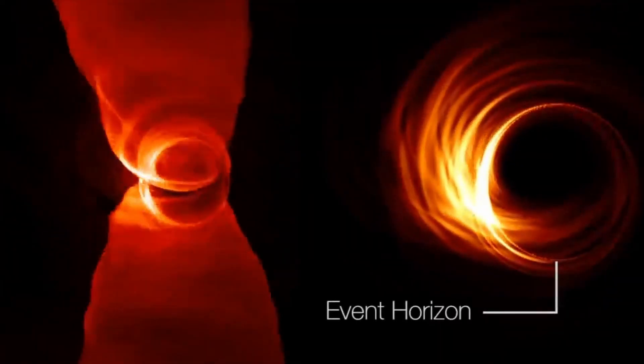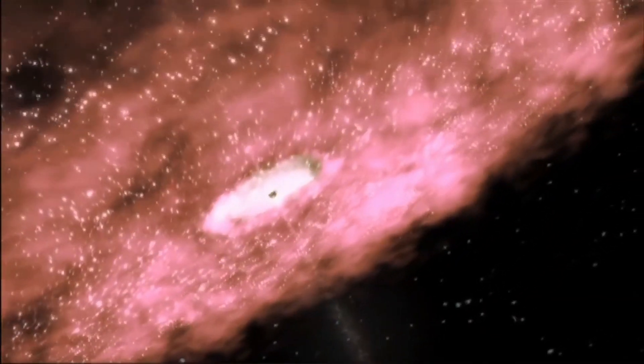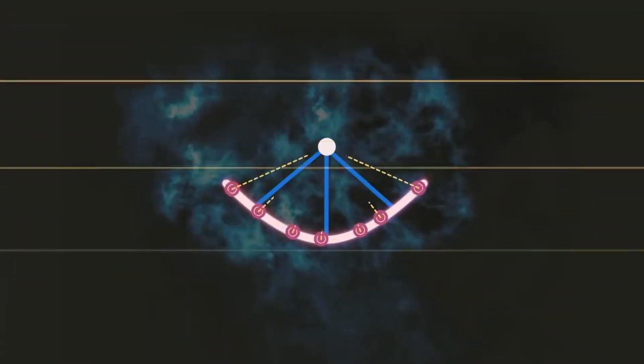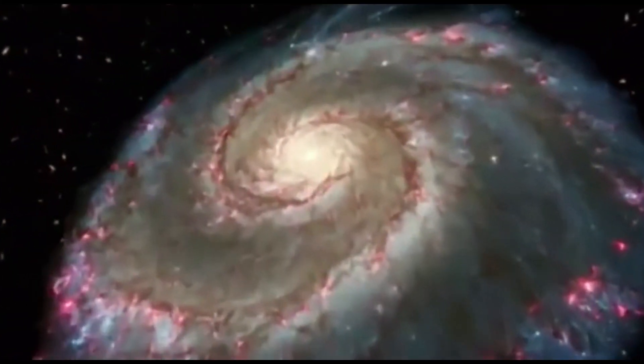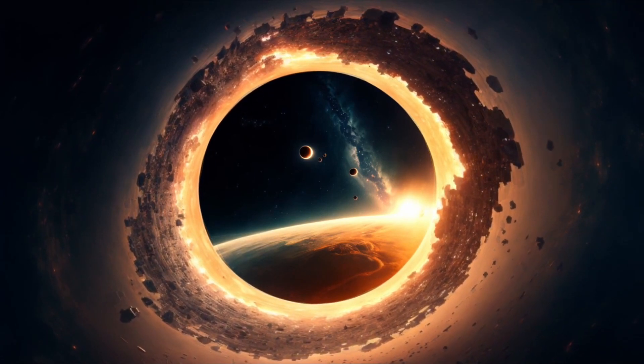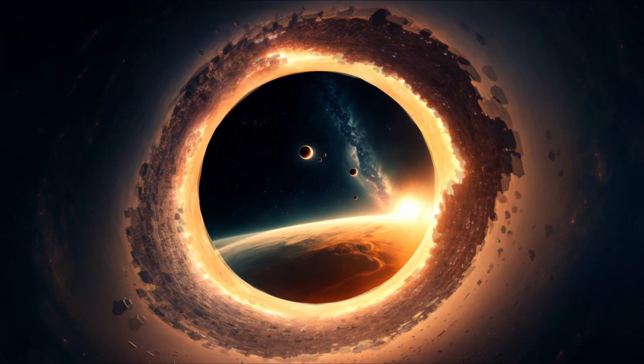The event horizon of a black hole is the boundary beyond which nothing, not even light, can escape the gravitational pull of the black hole. It is the point of no return, beyond which gravitational force is so strong that it overcomes all other forces in the universe. Once an object passes the event horizon, it is impossible for it to escape a black hole.